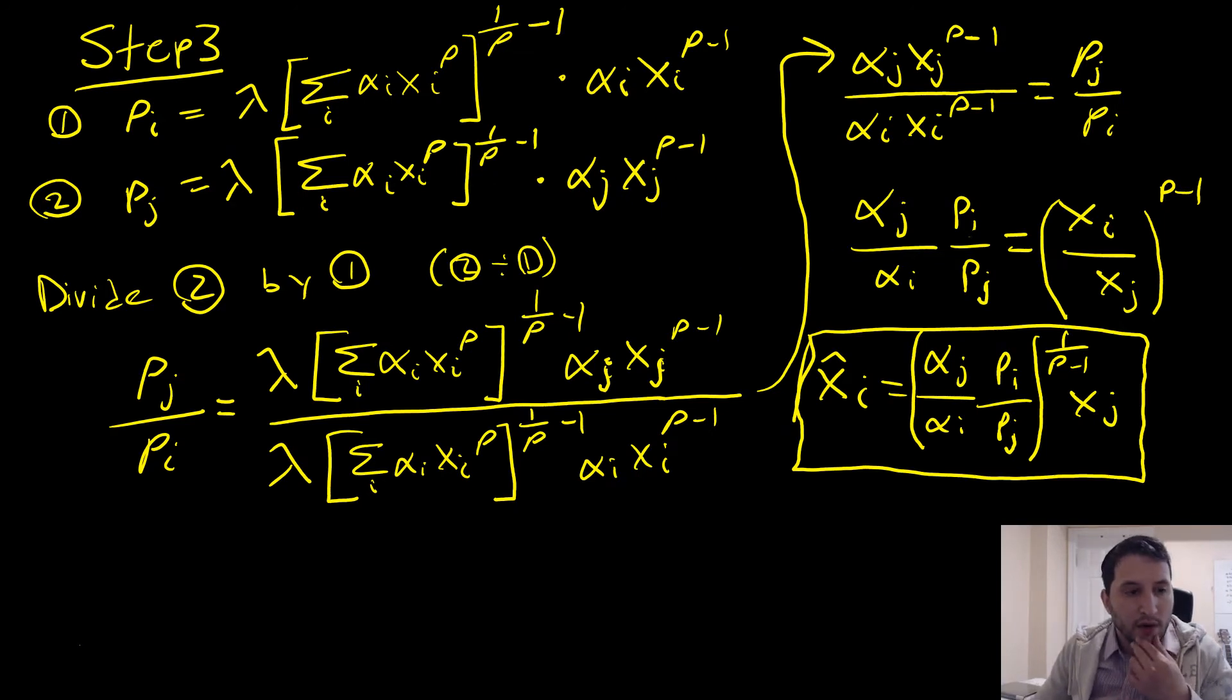Next, we're going to rearrange our first order conditions. Equation 1 being for our first order condition with respect to i and our second equation being our first order condition with respect to j. We're then going to divide 2 by 1 and we're going to get the following result. Cleaning this up, we have the following, right?